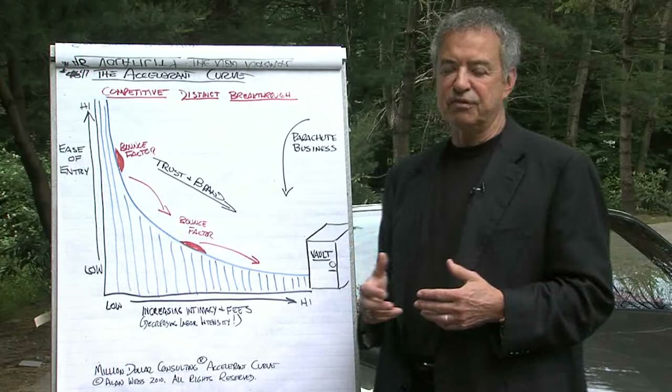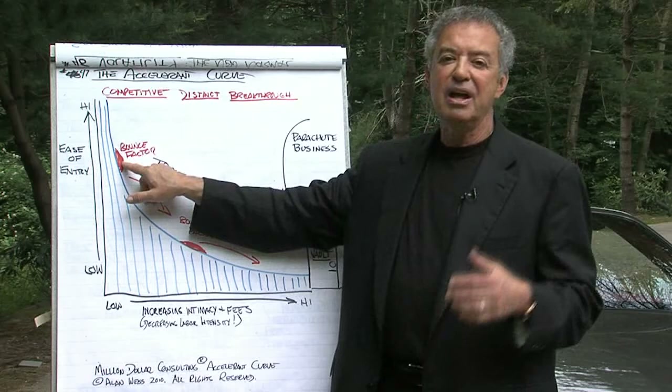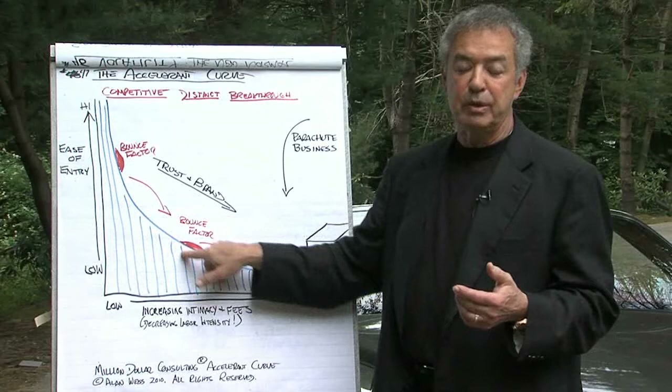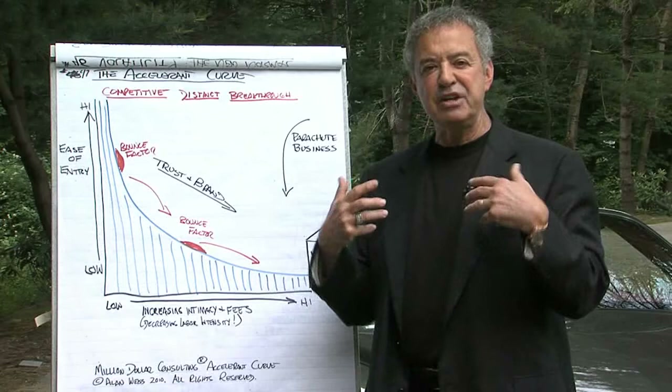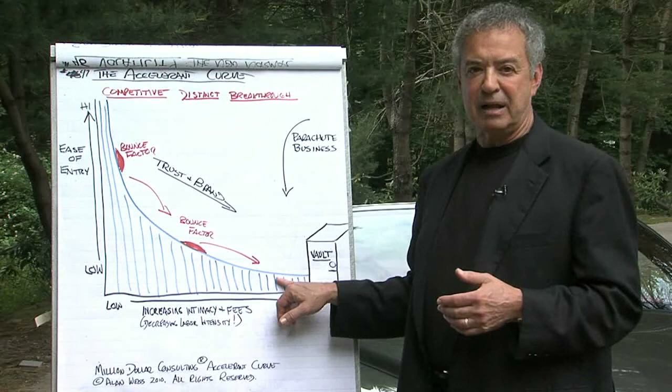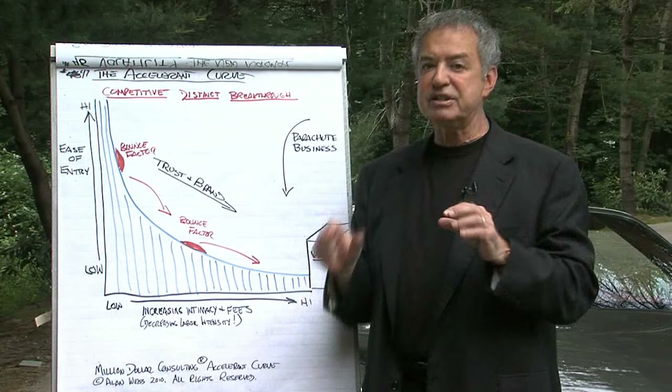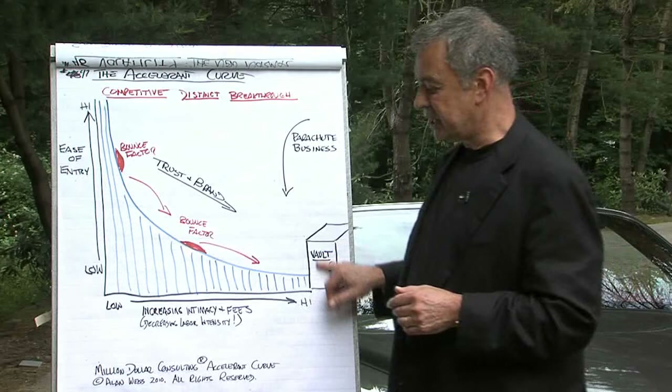Now, what we've found since we created this is the following: there are bounce factors. Somebody can work with you in some fashion that bounces them further down the curve without having to go through each of these verticals. For example, a lot of people read Million Dollar Consulting, which I've written, and they join my mentor program. Some people join my mentor program and bounce right over into my Million Dollar Consulting College. So you create these bounce factors, if you're conscious of them, and suddenly people are propelled still faster down the accelerant curve.